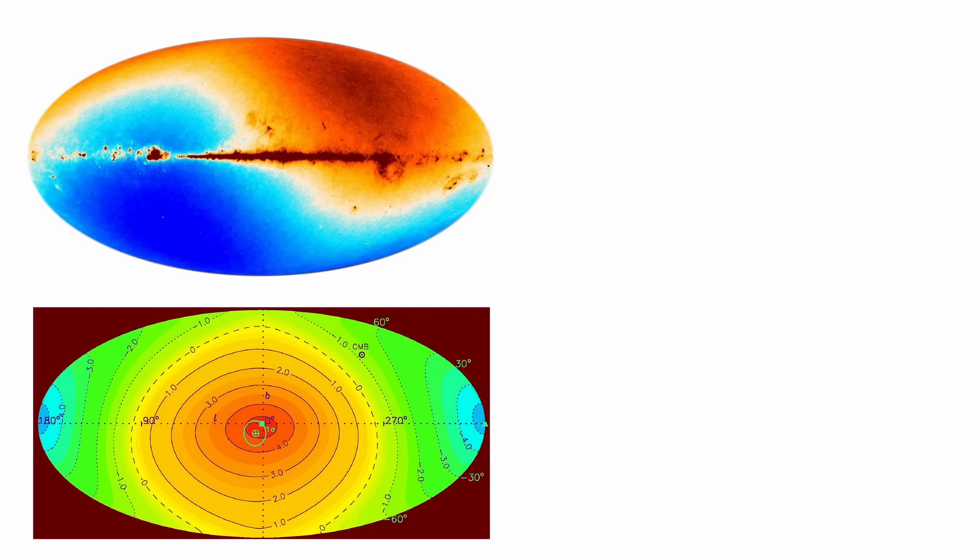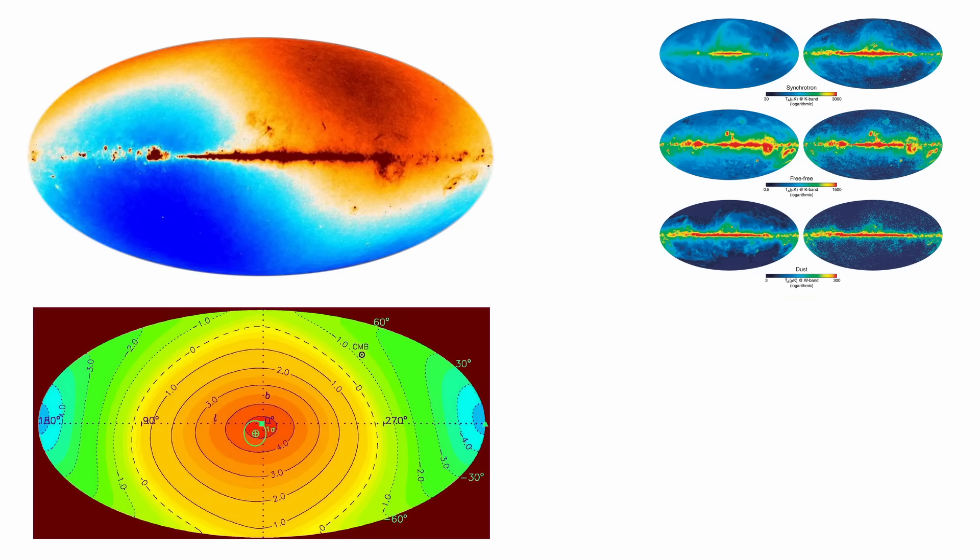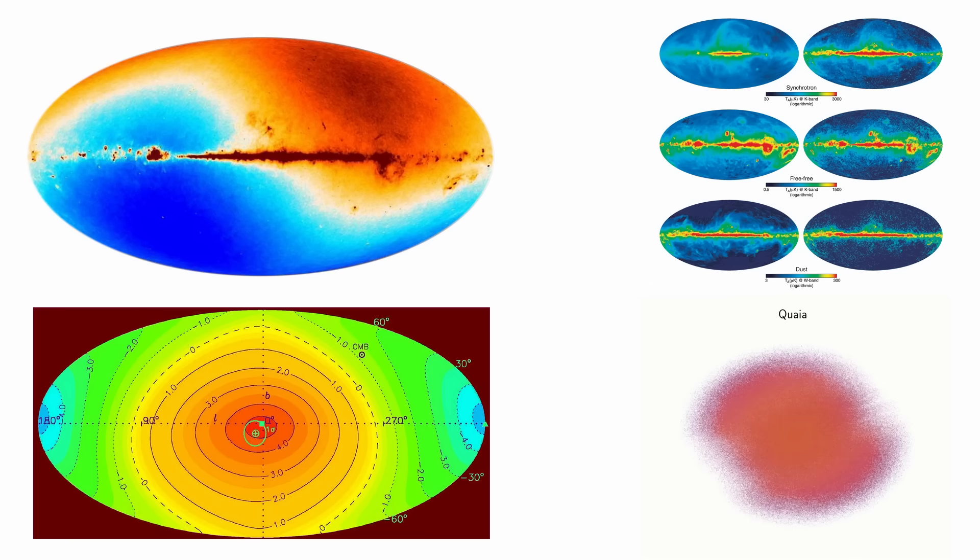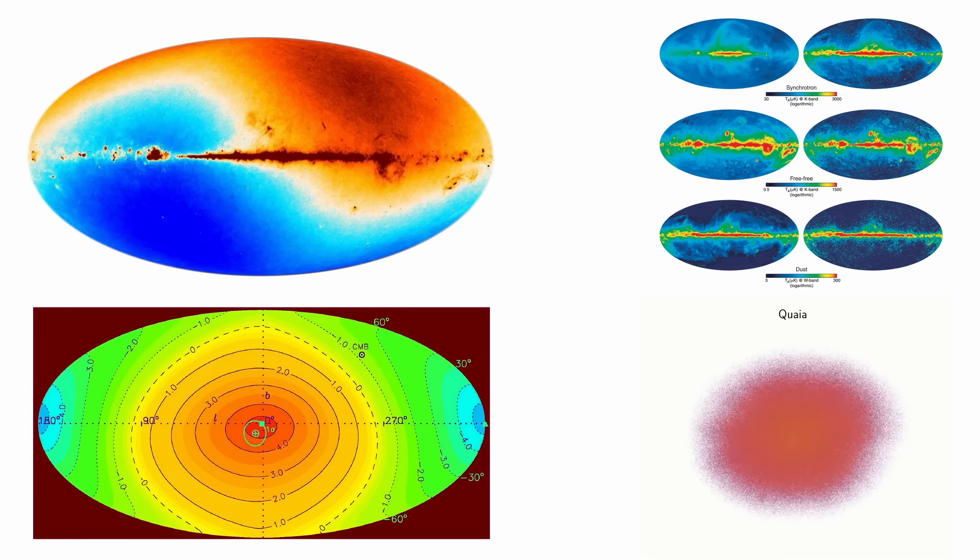A second possibility is to claim that both signals are misleading. Perhaps the CMB dipole is contaminated by foregrounds and the quasar dipole is distorted by survey effects. Yet, this is even harder to defend. The CMB dipole is a first order feature that requires almost no processing.